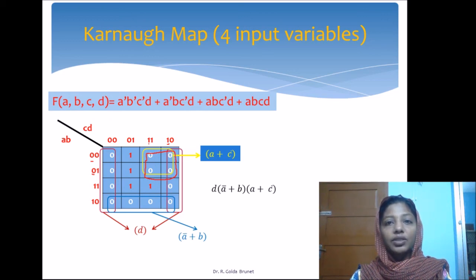In the next video lecture, we will discuss one more simplification procedure called Quine-McCluskey method, which can deal with simplification of boolean expressions having a large number of variables. When the number of variables is more than four, it is difficult to use the Karnaugh map. In such cases, we can use the Quine-McCluskey method. Thank you for watching this video.